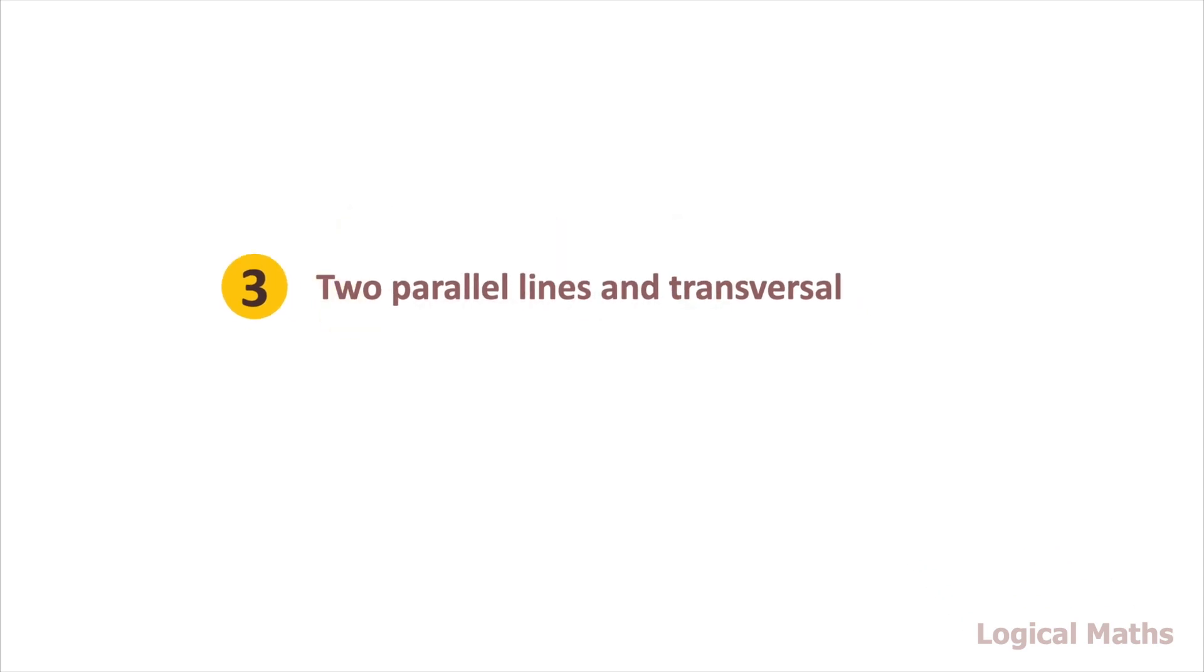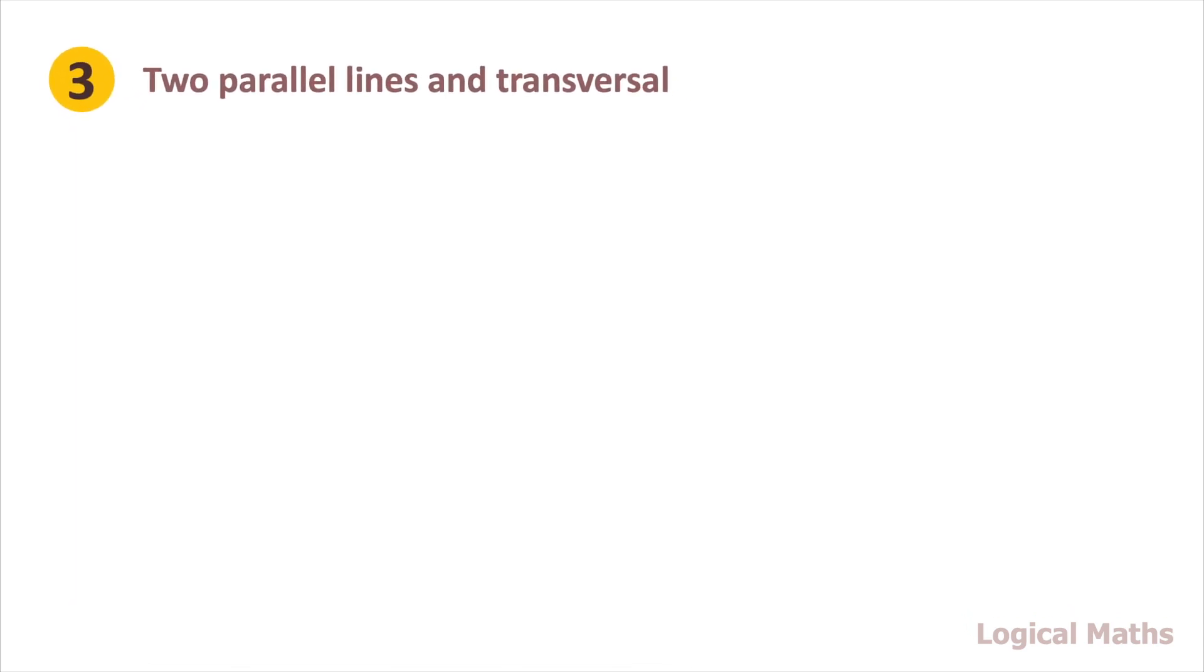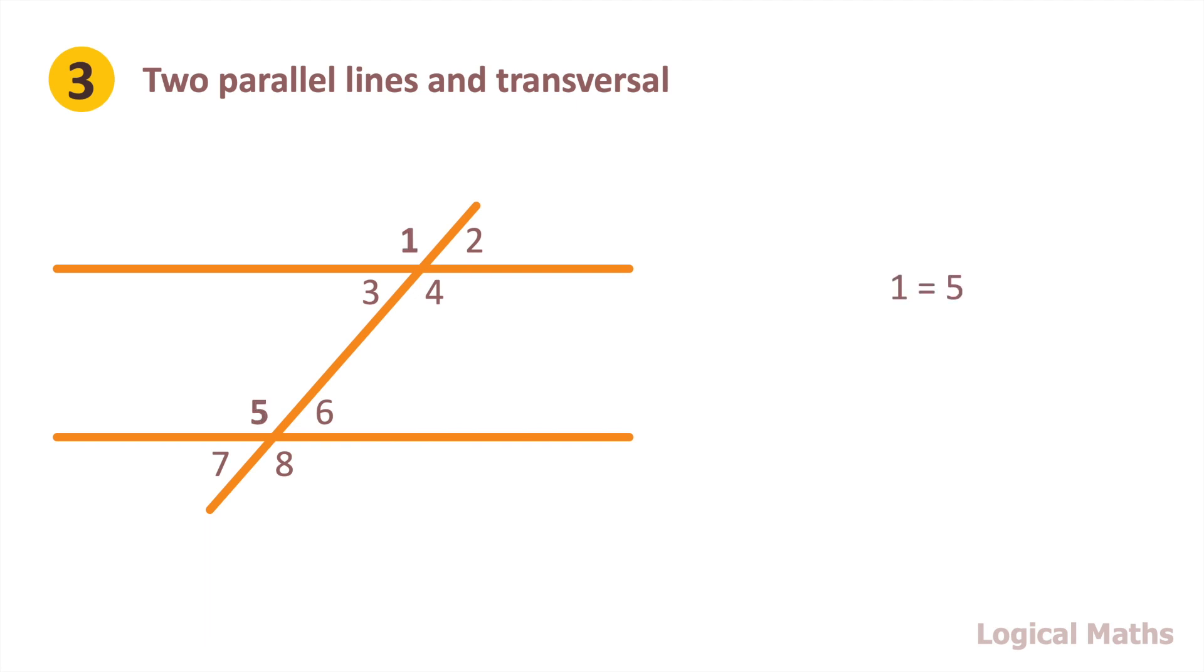And finally, let's move to the last one. Assume we have two parallel lines and have a third line that crosses them. The crossing line is called a transversal. When a transversal line intersects with two parallel lines, eight angles are produced. Mark them with numbers from 1 to 8. Then angles 1 and 5 are equal. Also 2 and 6 are equal. 3 and 7 are equal. 4 and 8 are equal.